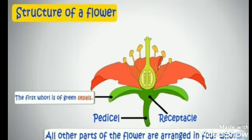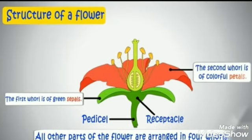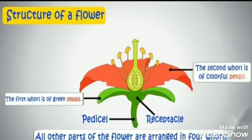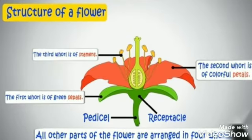Second is the colorful petals. Petals of different flowers are of different colors. Their bright colors attract insects like butterflies, bees, etc. towards them for pollination.